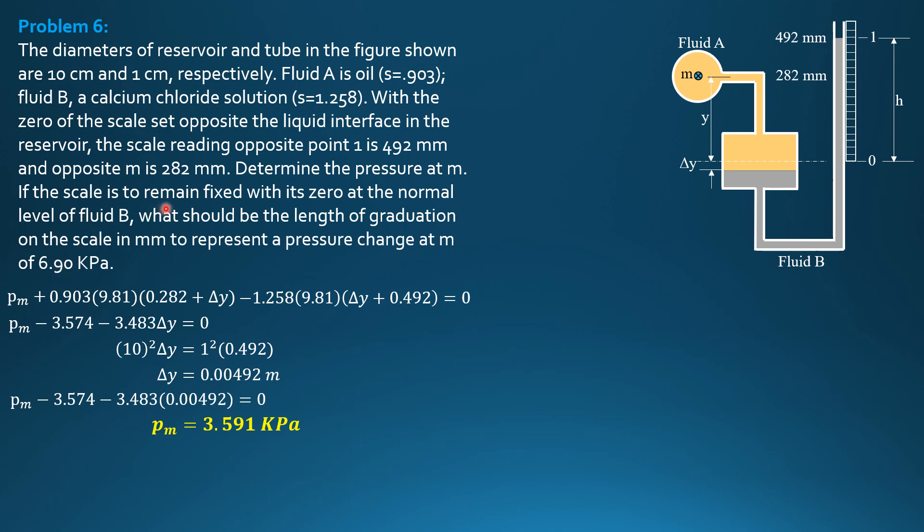In the second part, if the scale is to remain fixed with its zero at the normal level of fluid B, what should be the length of graduation of the scale in mm to represent the pressure change at M of 6.9 kilopascals? So the pressure transmitted at the normal level is 6.9 kilopascals. We sum up pressure from this normal level down to this interface, then we jump across again and we move up.